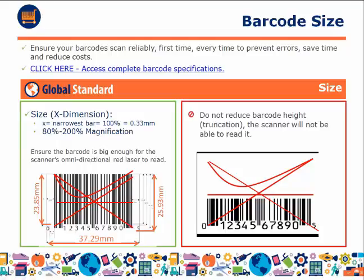There are standards around the size of your barcode. The X dimension — the narrowest part of your barcode at 100% magnification — must be 0.33 mm. The barcode can be shown between 80% to 200% magnification. It is critically important that the barcode is not truncated and that the height is not reduced, because if that happens the omnidirectional red laser light of the scanner will not be able to read the majority of the barcode.